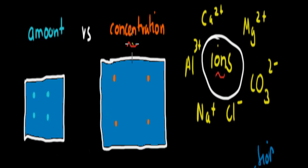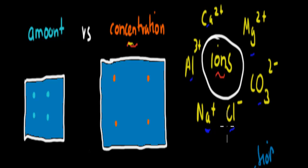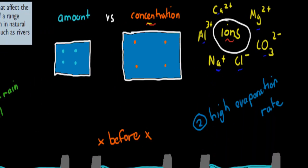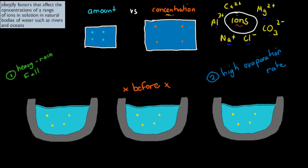So we're talking about concentration, and we'll also be talking about ions. Remember, ions are anything that's positively or negatively charged. For example, sodium, chlorine, carbonate, magnesium, calcium, and aluminium ions. These are all examples of ions we'll cover in this video. What we have to do for this dot point is identify — which means recognize or name — factors that affect the concentration of a range of ions in solution in natural bodies of water, such as rivers and oceans.